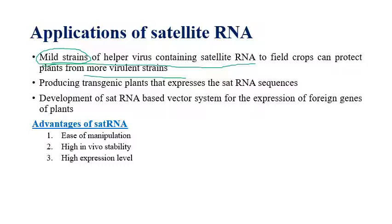Producing transgenic plants that express satellite RNA sequences can protect plants from severe strains of plant viruses. Additionally, development of satellite RNA-based vector systems for expression of foreign genes in plants can be helpful — such vectors can prevent viral infection or reduce its severity.